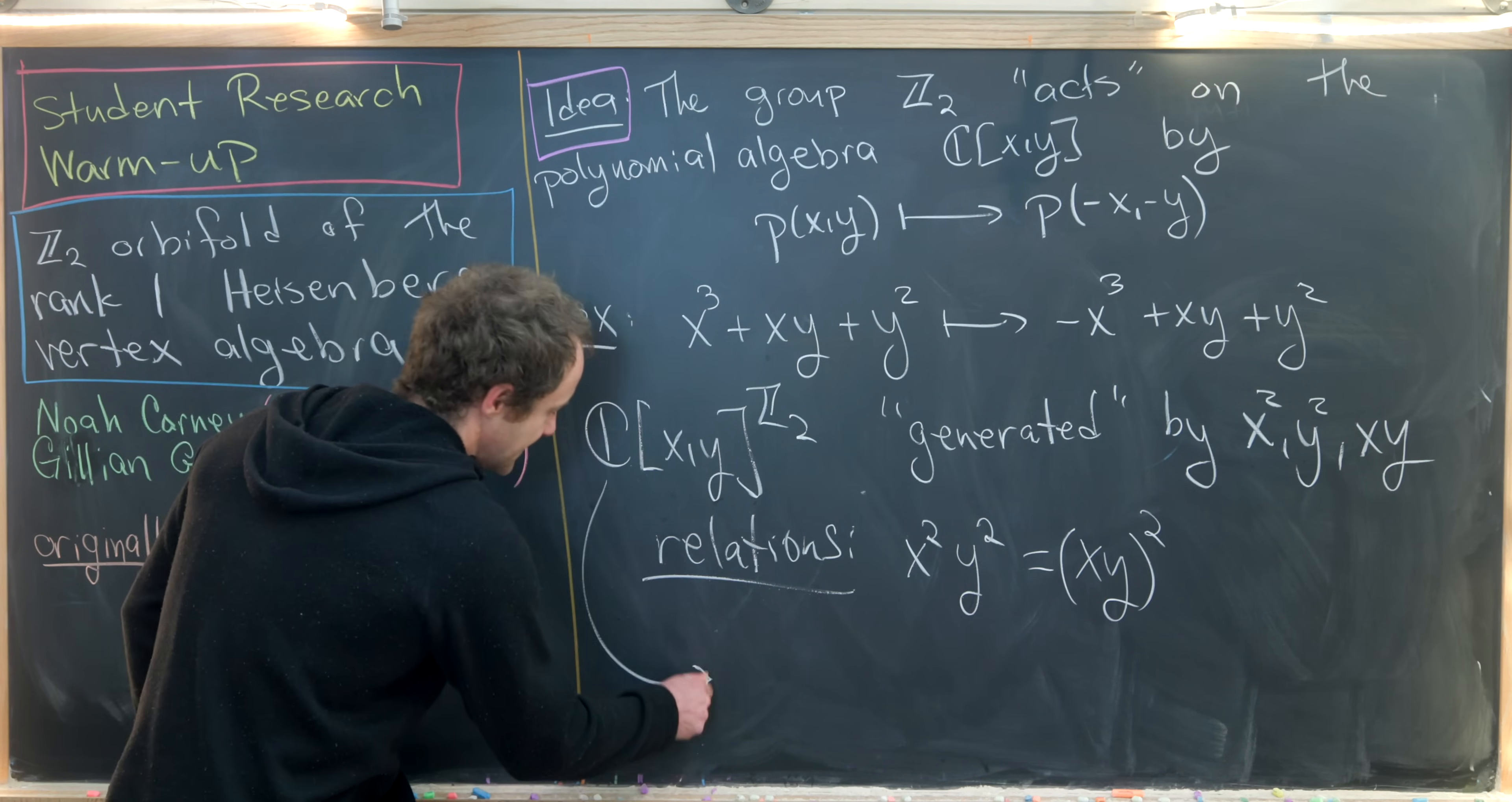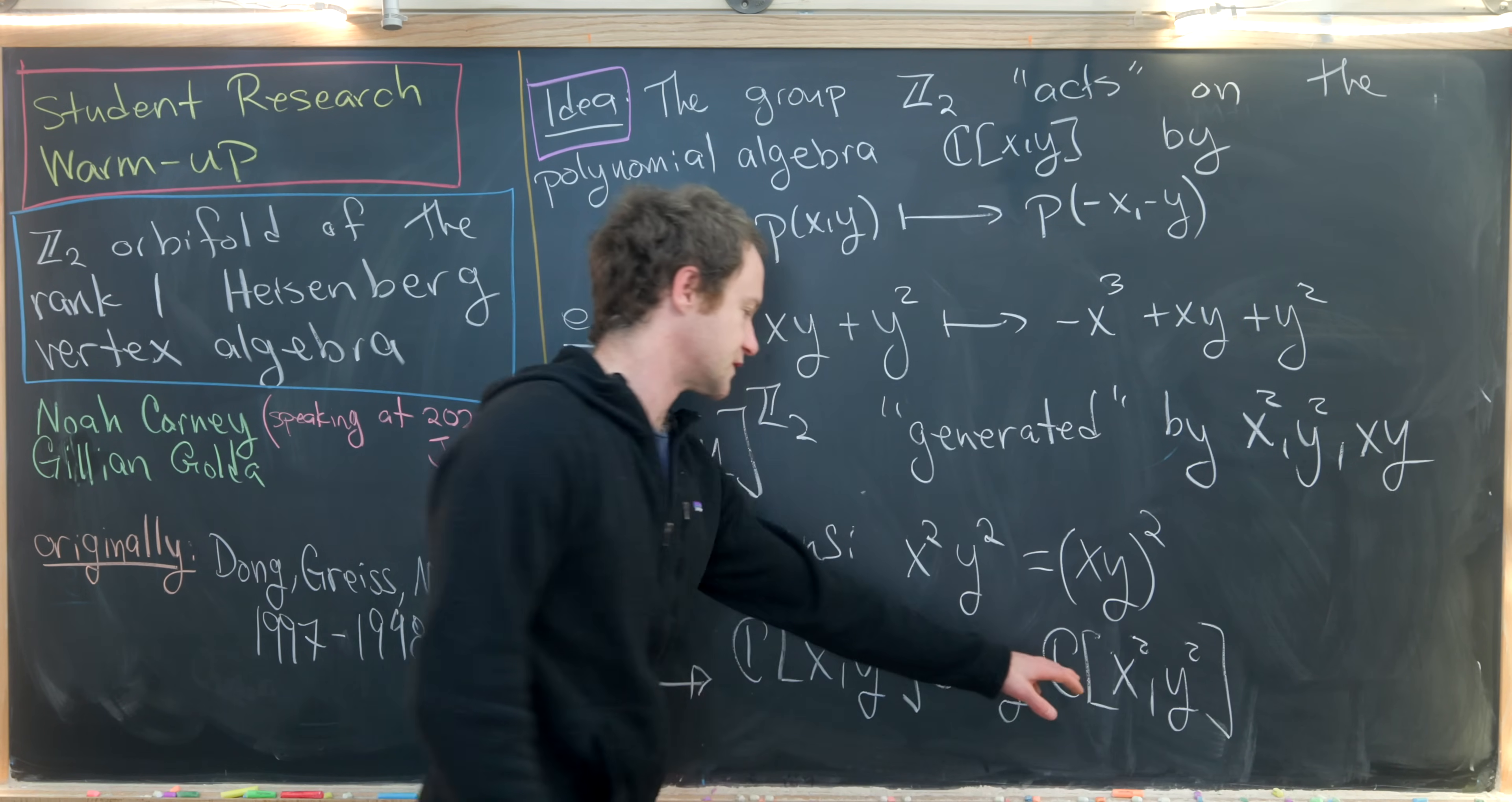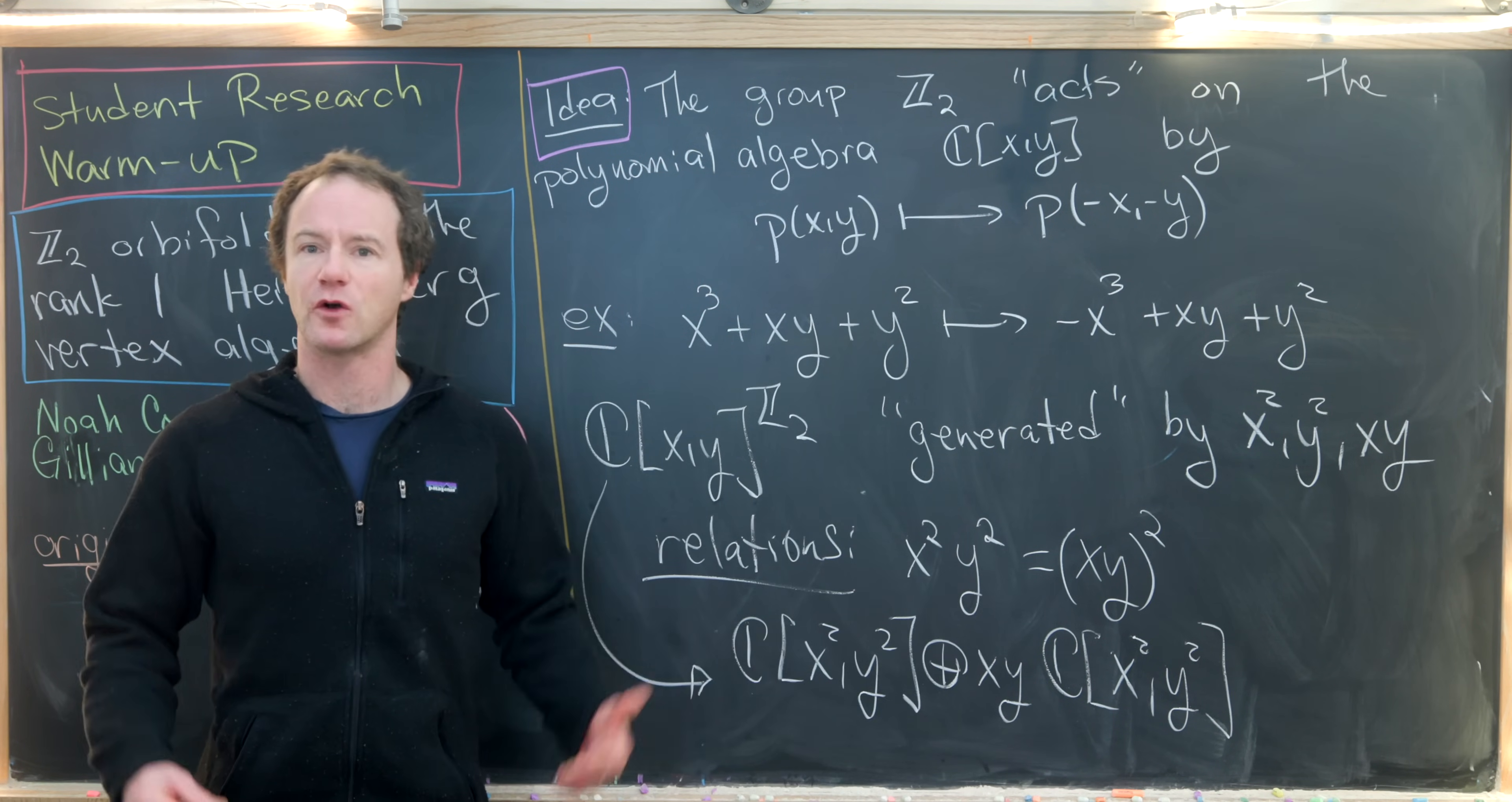That means we can take this invariant ring and write it as the polynomial ring with two variables X squared and Y squared, and then the direct sum of the same polynomial ring in two variables where none of them are constants but they're all multiples of XY. Given these basic examples, we're ready to jump in to Jillian and Noah's description of their warmup problem.